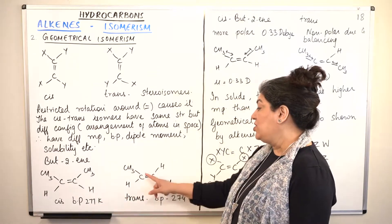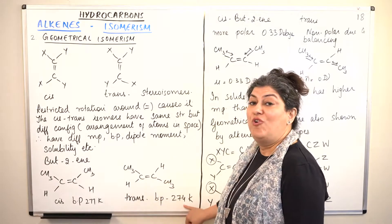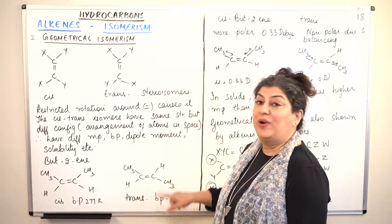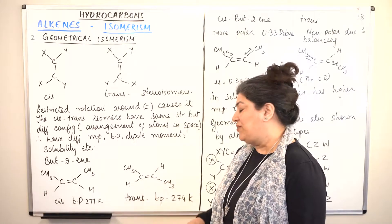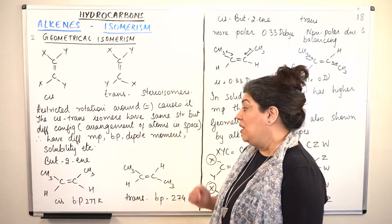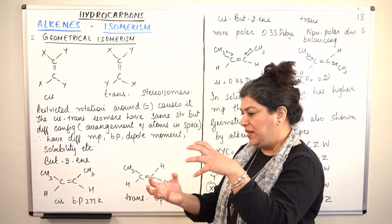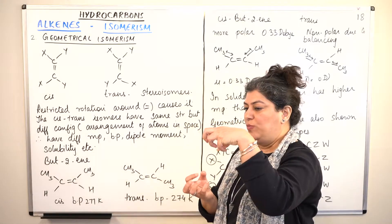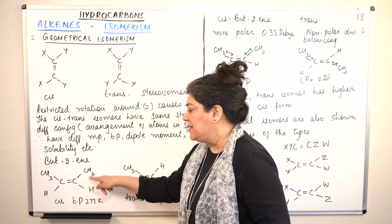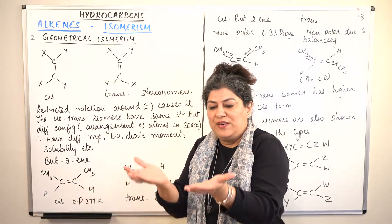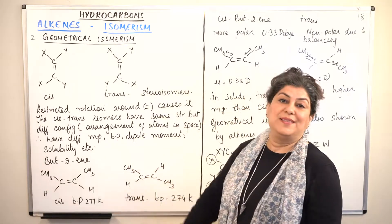The boiling point of the cis isomer of but-2-ene is 277 K, while the boiling point of the trans isomer is 274 K, meaning the trans isomer boils more easily. This is because the trans isomer has a more balanced, symmetrical structure — the two bulky methyl groups are on opposite sides — making it a more stable arrangement.